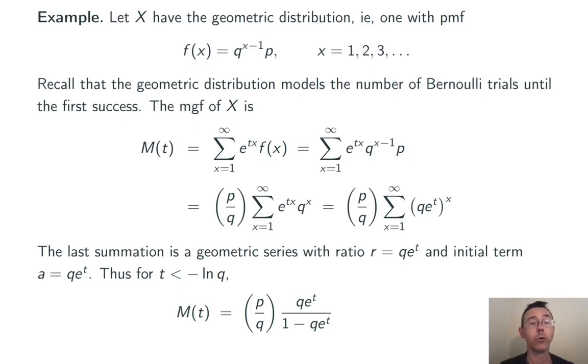This gives us a closed form for our moment generating function. Here it is simplified just a tiny bit. The moment generating function for a geometric distribution is pe^t over (1 minus qe^t).